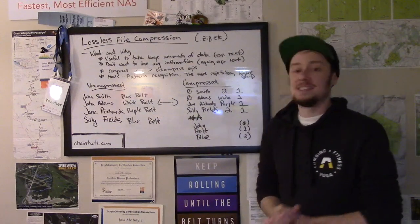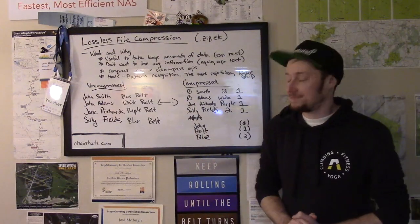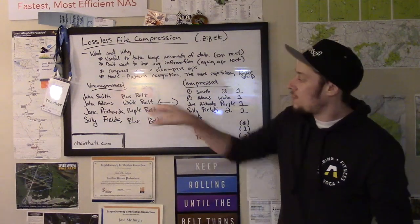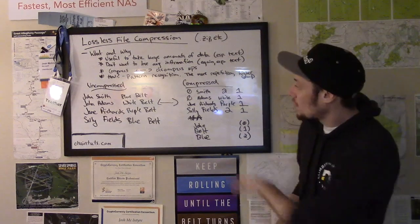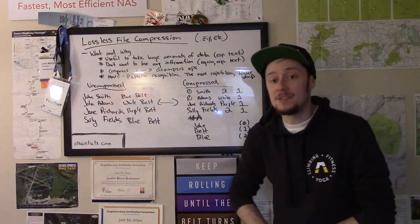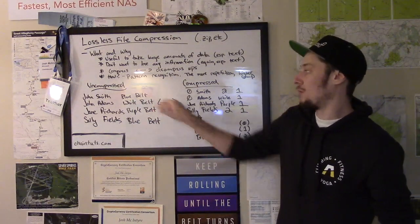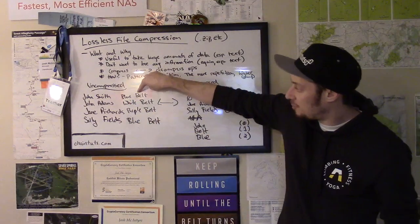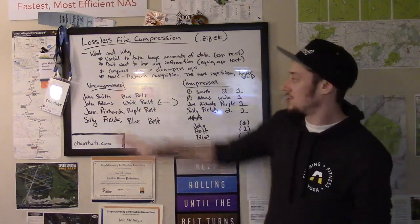Let's say our uncompressed data set is a table of students at a jujitsu school — or maybe members at a climbing gym — and we're going to store their name and their belt rank. So we have John Smith, who's a blue belt; John Adams, who's a white belt; and a couple more students in our list. How may we take this information and pull out some patterns that we can make smaller in our file? There are a couple words here that are repeated. The first one is the name John, which appears twice in our list. I also see two blue belts, and every person in our table has some belt rank that ends with the word belt — so we see the word belt four times. In this data set, each time the word belt appears, that takes up four bytes of information: four one-byte characters for B-E-L-T. And blue is four characters and John is four characters.